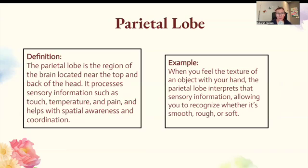Parietal lobe. The parietal lobe is the region of the brain located near the top and back of the head. It processes sensory information such as touch, temperature, and pain, and helps with spatial awareness and coordination. So when you feel the texture of an object with your hand, the parietal lobe interprets the sensory information, allowing you to recognize whether it's smooth, rough, or soft.